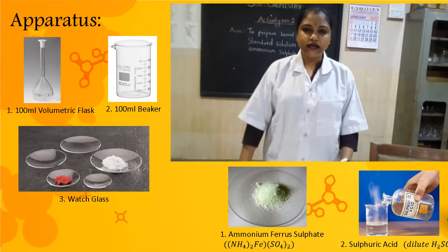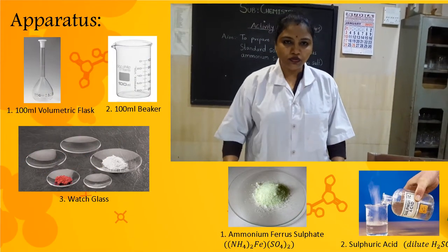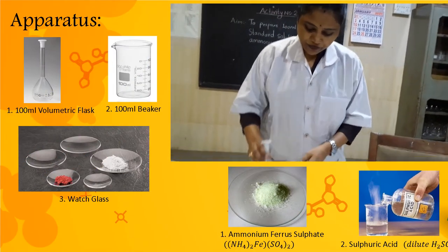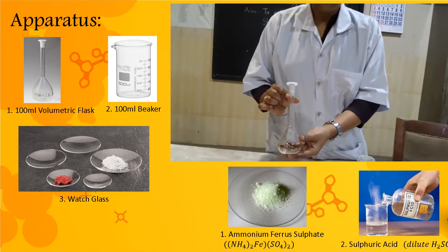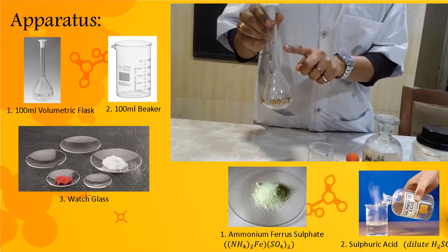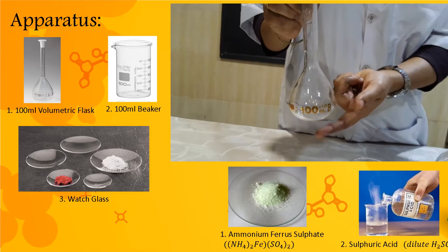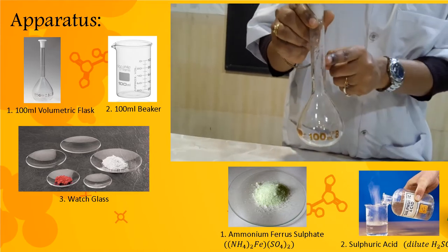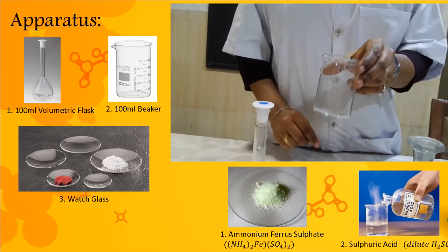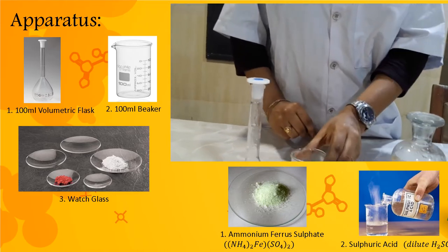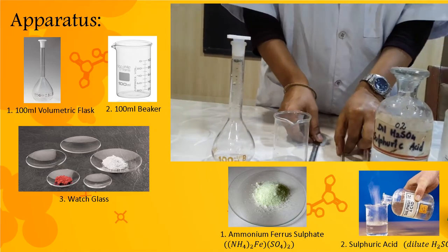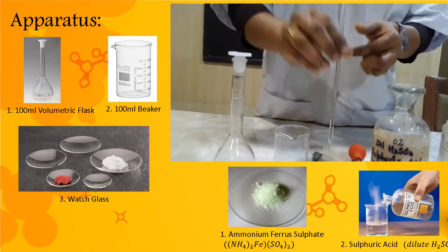Now let us see which apparatus we are going to use in this activity. This is a 100 ml volumetric flask — it has a marking, and from the base up to that mark is 100 ml. This is a beaker, a small 100 ml beaker. And this is a spatula and a glass rod.